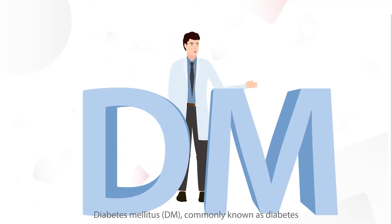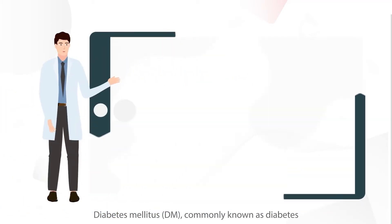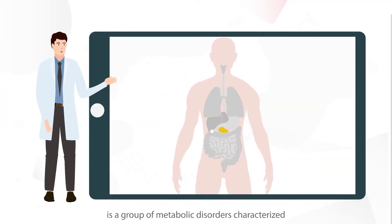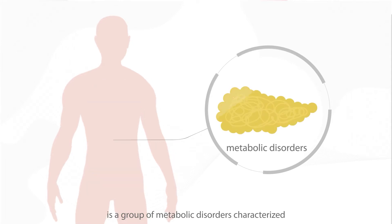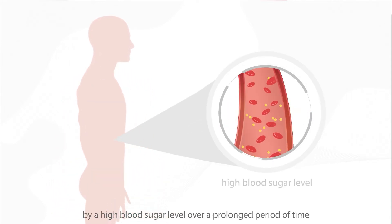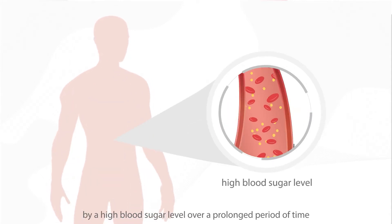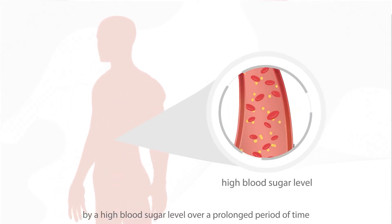Diabetes mellitus, commonly known as diabetes, is a group of metabolic disorders characterized by a high blood sugar level over a prolonged period of time.